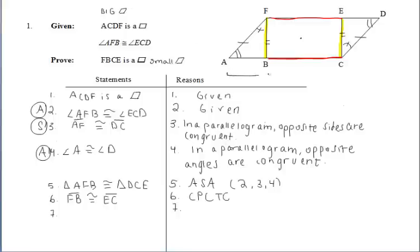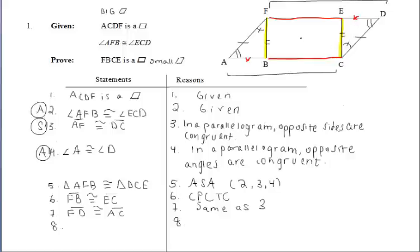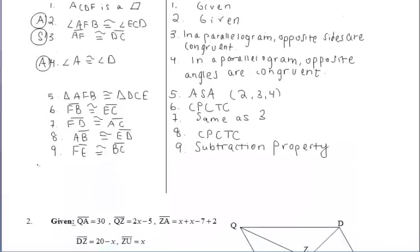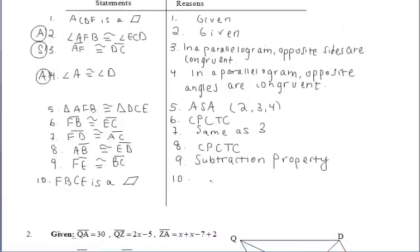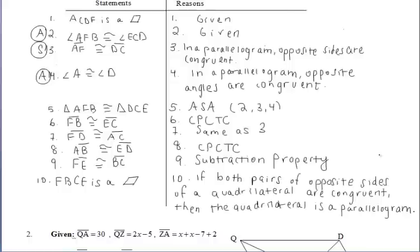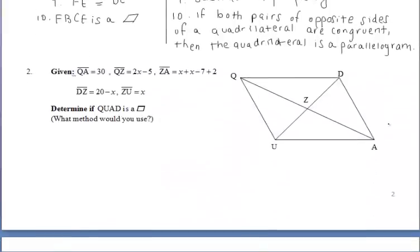We can more easily get the red segments congruent. Since the large figure is a parallelogram, segments AC and FD are congruent. Those segments are too large, so we subtract off segments AB and ED — but first we state AB and ED are congruent by CPCTC as corresponding sides of the congruent triangles. Then using the subtraction property, FE is congruent to BC, giving us both pairs of opposite sides congruent in the quadrilateral. So FBCE is a parallelogram, because if both pairs of opposite sides of a quadrilateral are congruent, then the quadrilateral is a parallelogram.